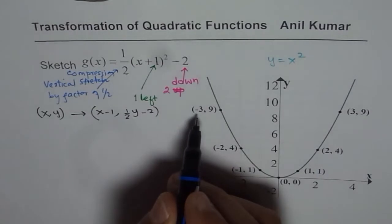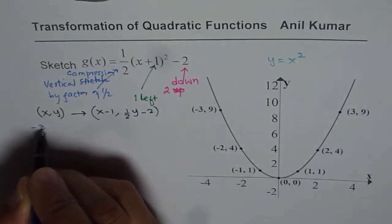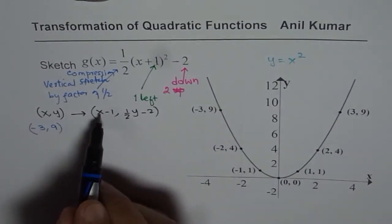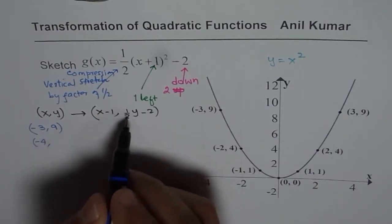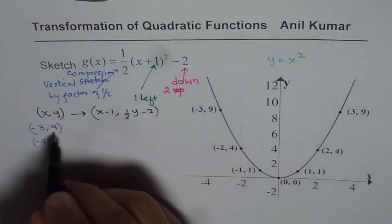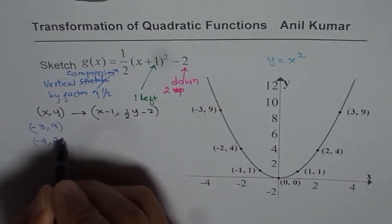Let's perform this. We have (-3,9). So if I start with (-3,9), in that case, one less than -3 is actually -4. And as far as y values concerned, half of 9 is 4.5. 4.5 take away 2 is 2.5. So we get our point.